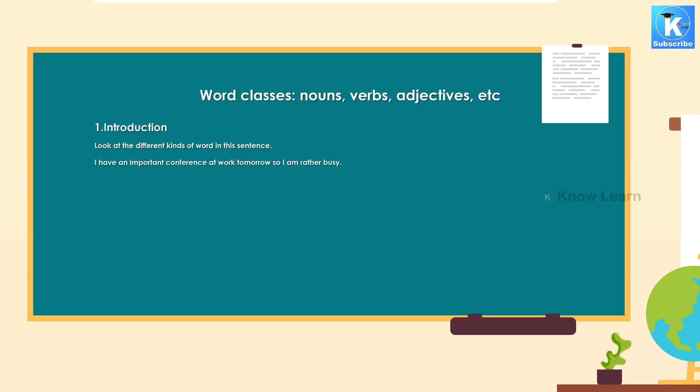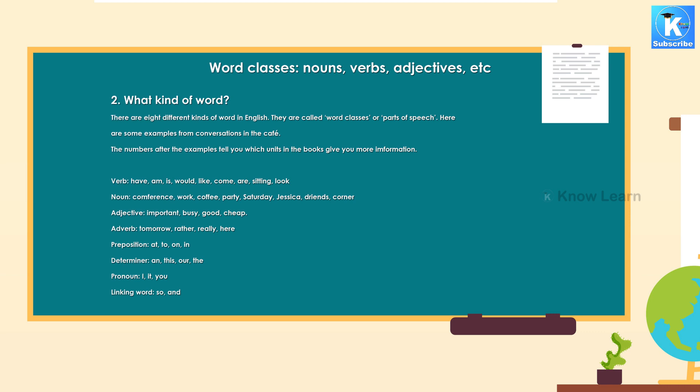Word classes: nouns, verbs, adjectives, etc. Introduction: Look at the different kinds of word in this sentence. I have an important conference at work tomorrow so I am rather busy. What kind of word? There are eight different kinds of word in English. They are called word classes or parts of speech. Here are some examples from conversations in the cafe. The numbers after the examples tell you which units in the books give you more information.